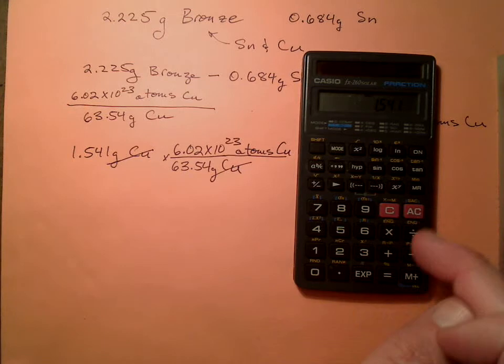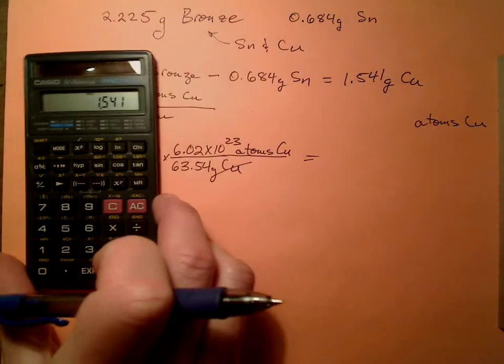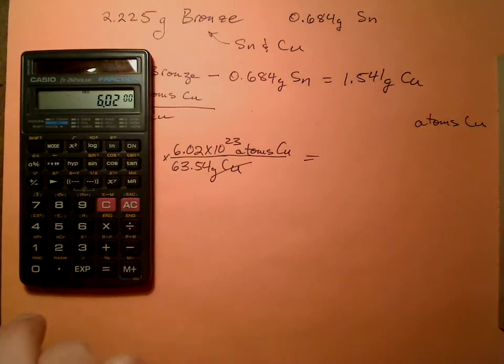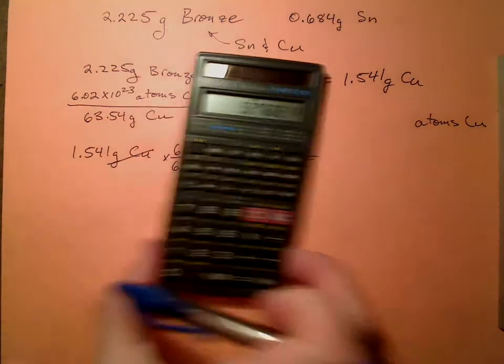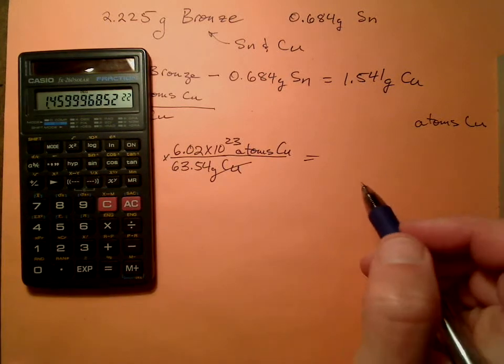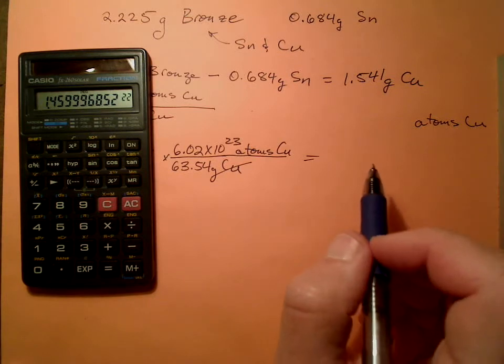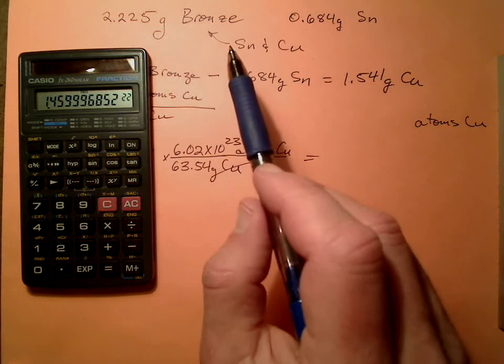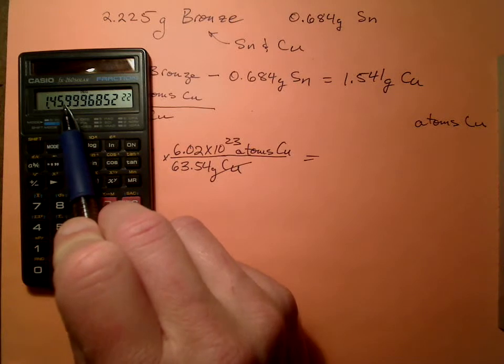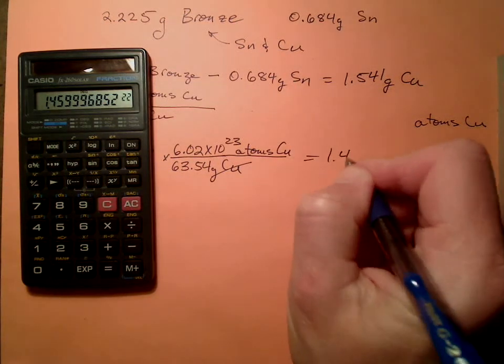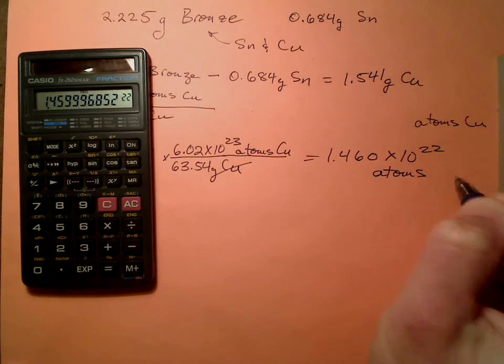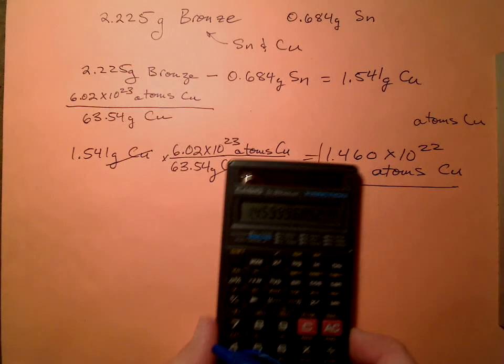1.541 times 6.02 times 10 to the 23rd divided by 63.54. Should get a big number because atoms are really teeny tiny things. So it looks like we're good to 1, 2, 3, 4 sig figs. So 1.460 and 9 is going to make it 1.460 times 10 to the 22nd atoms of copper.